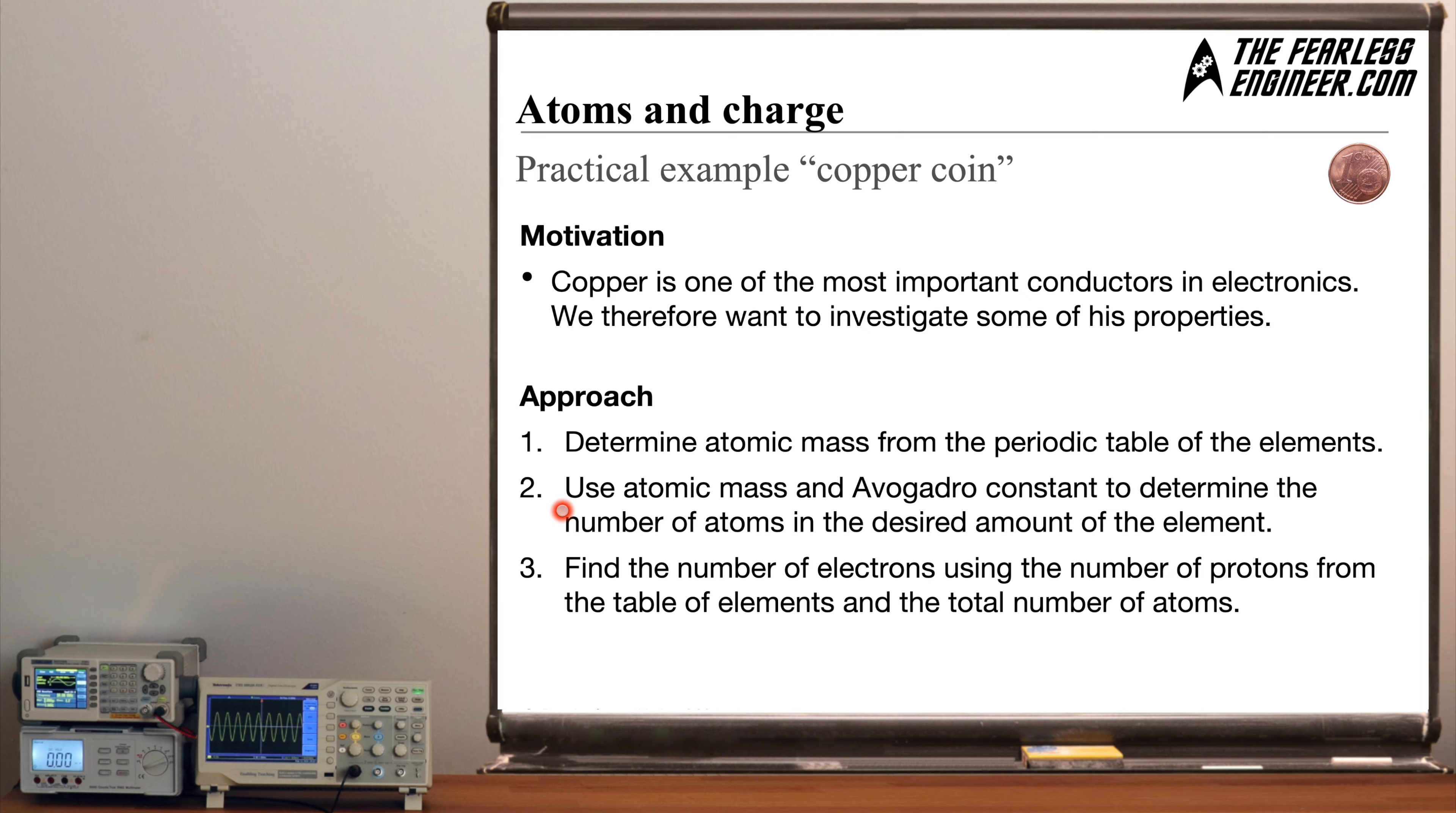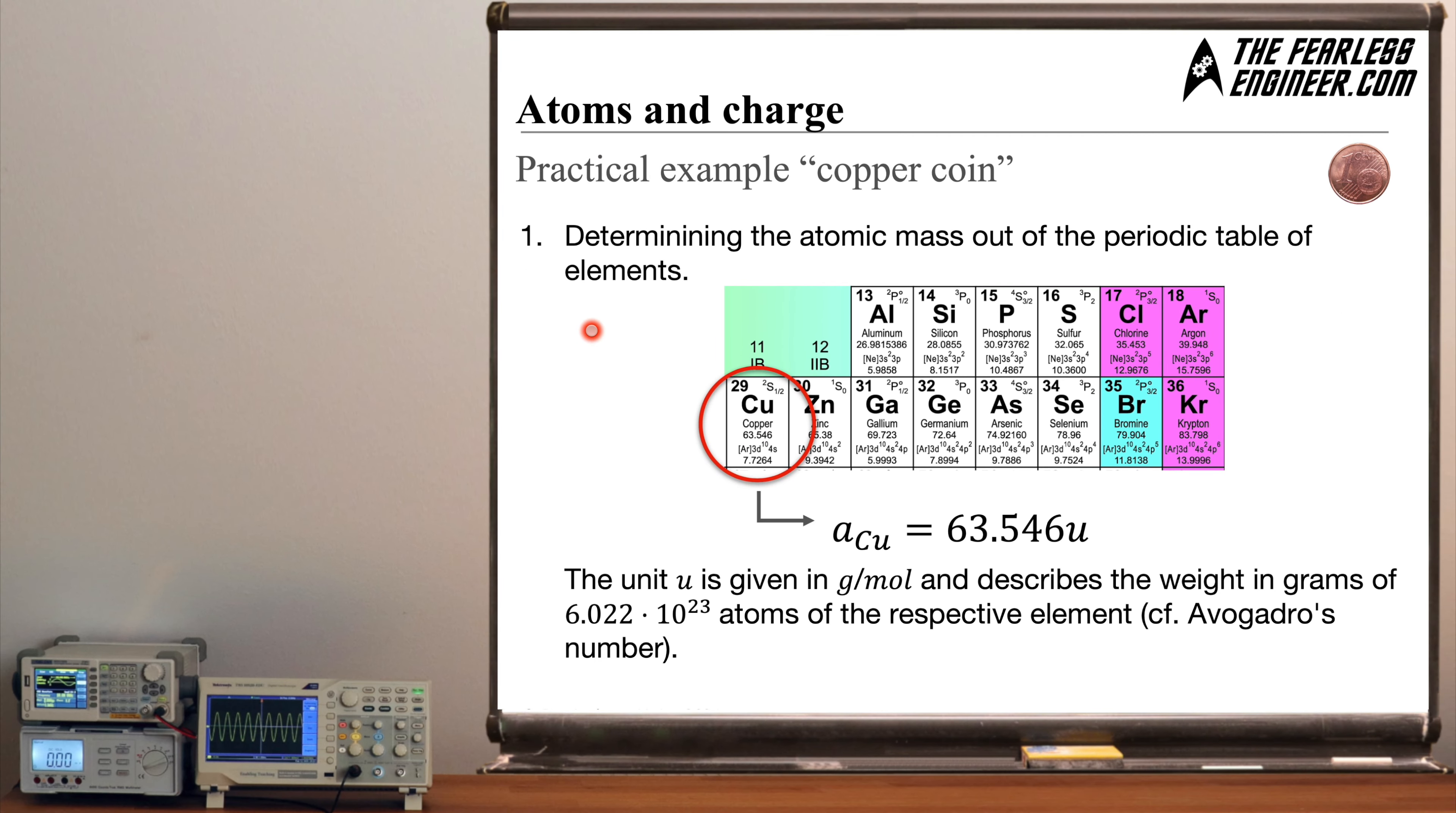And the approach which we want to follow here in this video consists of three major steps. First we want to determine the atomic mass using the periodic table of elements and then secondly we want to use this atomic mass and also something called the Avogadro constant to determine the number of atoms within the desired amount of the element copper which we want to look at. For example the weight of the copper coin we are talking about here. And lastly in the third step we want to find the number of electrons in the coin by using the number of protons which we can extract from the table of elements and also from the total number of atoms which we computed in step two. And that's it. So let's go.